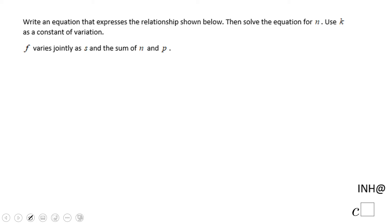Welcome or welcome back to I Need Help at C Squared. In this example, we need to write an equation that expresses the relationship below. So let's take a look first at this relationship that you notice down here. F varies jointly as S and the sum of N and P. This is what we call joint variation.